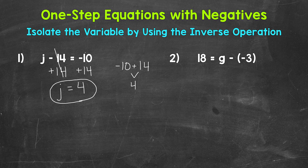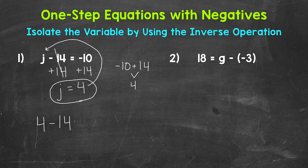j equals 4 — that's our solution. We can always check a solution by plugging it into the original equation. Let's plug 4 in for j: 4 minus 14 equals negative 10. 4 minus 14 does equal negative 10, so we have the correct solution. j equals 4.